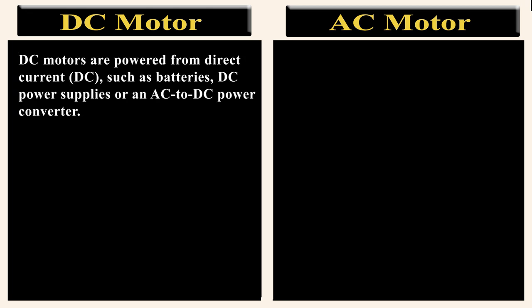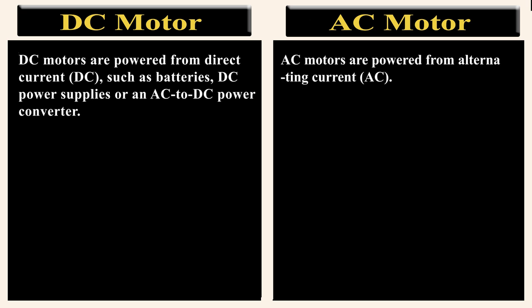The most basic difference is the power source. DC motors are powered from direct current such as batteries, DC power supplies, or an AC to DC power converter, while AC motors are powered from alternating current.